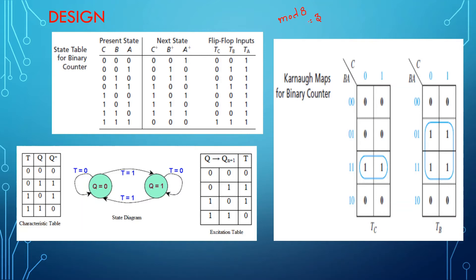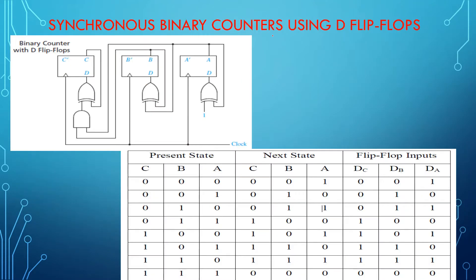As explained in the previous class, most things with respect to T flip-flop and D flip-flop design of counters are almost the same. Before getting into the design part, we will look into the state diagram, state table, and transition diagram of the D flip-flop. Getting back to the state diagram, we can see this is one state: 0 is one state and 1 is the second state.